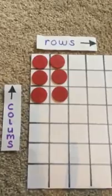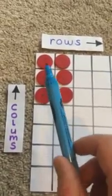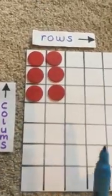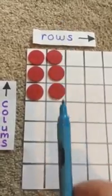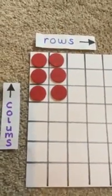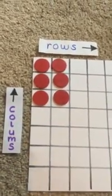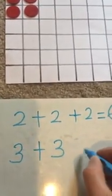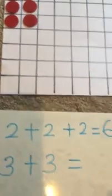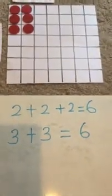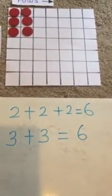Now what about columns? We've done rows — let's look at columns. How many counters or children are in each column? Let's count: one, two, three. So there's three in that column — columns go up, remember. And there's one, two, three counters in that column too. How many columns are there? Well, there's one, two. So there's three children in each column and there are two columns. So we write: three counters in the first column, plus three in the second column, equals — the answer is exactly the same — six. So we've got two ways to show our array of six counters.